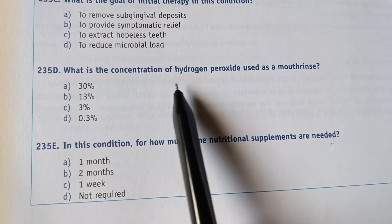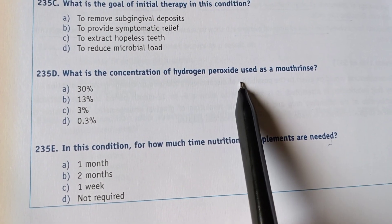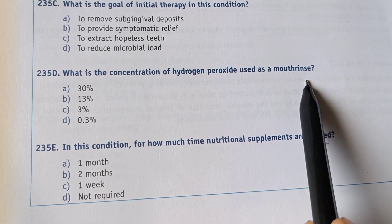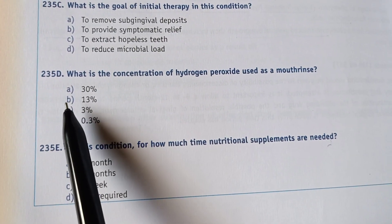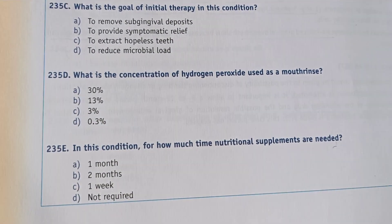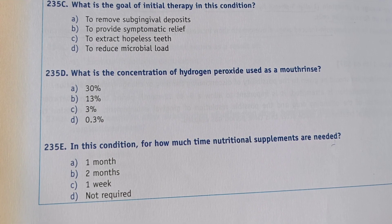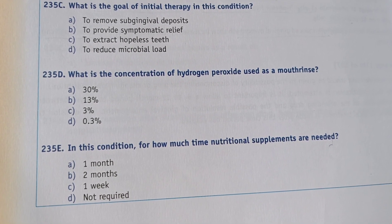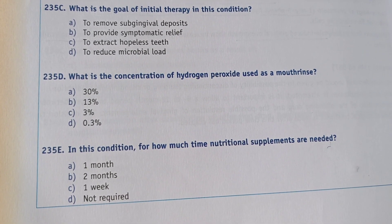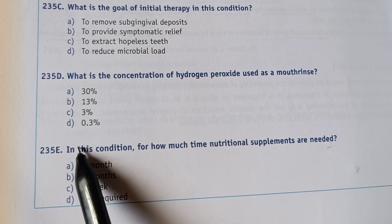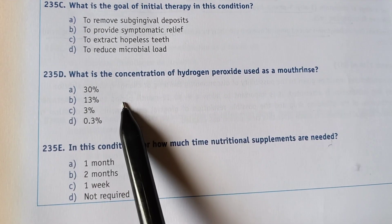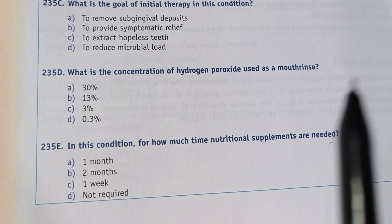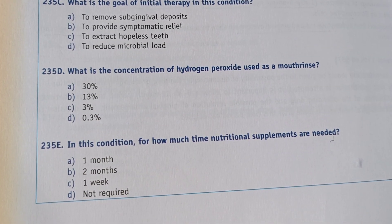Next question: what is the concentration of hydrogen peroxide used as a mouth rinse? Options are: 30%, 13%, 3%, and 0.3%. This is an answer to memorize — option C, 3%, is the correct concentration of hydrogen peroxide used as a mouth rinse.